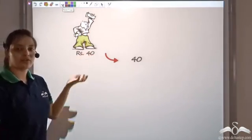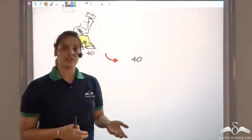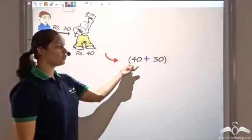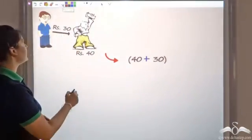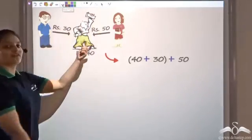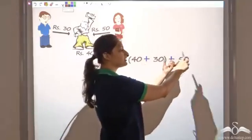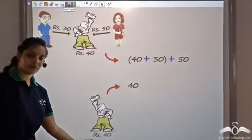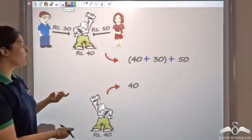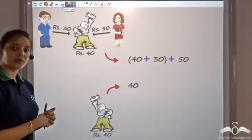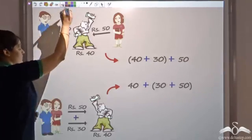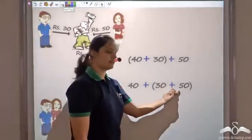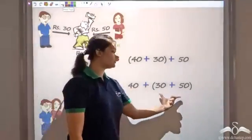Now let us look at associativity. Say you had 40 rupees again and you were in need of money, so you go to your friends and ask for money. One friend gives you 30 rupees, so you have 40 plus 30. Then another friend gives you 50 rupees, giving you 40 plus 30 plus 50. In a second situation, your friends pool together — they add 30 plus 50 first and give you that amount, so you had 40 and received 30 plus 50 more.